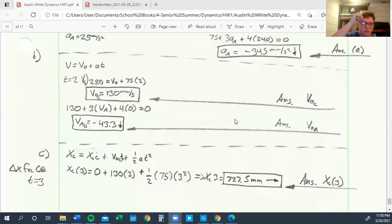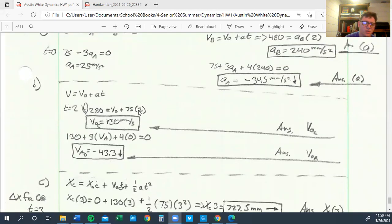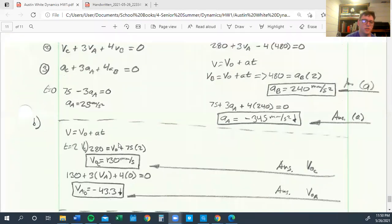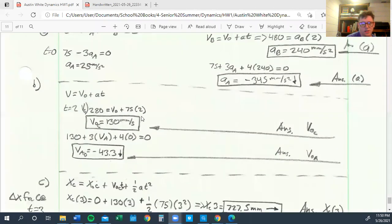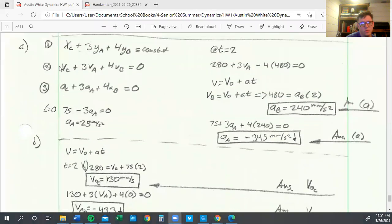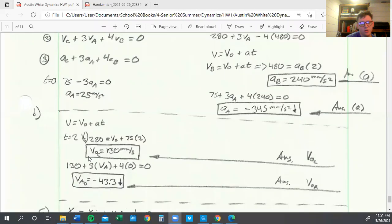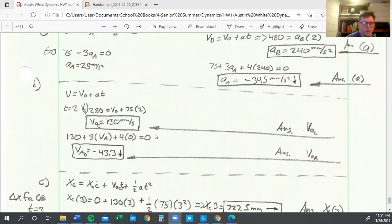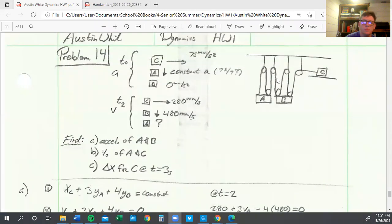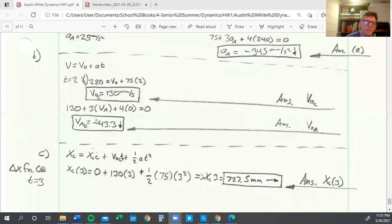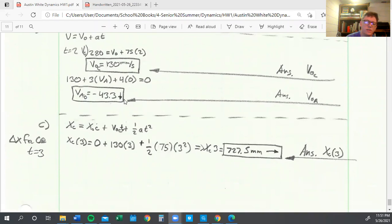Then we get to problem B where we need to find initial velocity of C and initial velocity of A. We use our regular V equals V naught plus AT equation. At T equals two, velocity of C equals 280. We don't know initial velocity, but we do know acceleration is 75 and T equals two. We divide everything out and get V naught C equals 130. We come back to equation two, plug everything in. It's multiplied by three because we got three ropes connected to A, and B is multiplied by four because of the four ropes connected to it. The initial velocity of B equals zero, so we get initial velocity of A is negative 43.3 downwards.